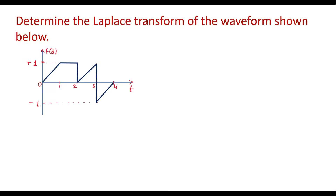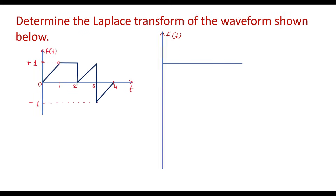Let me split this f(t) into different small signals like f1(t), f2(t), and so on. We can see that at t equal to 0, a ramp signal begins. I will consider the first sub-signal as f1(t), which is nothing but a ramp signal. So here I can draw the sub-signal f1(t), which is a ramp signal beginning at t equal to 0.